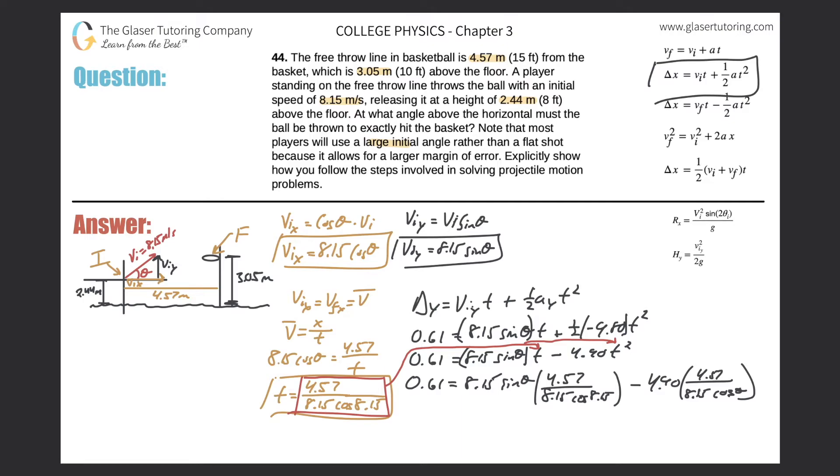Now what are we going to do? I did this so that now I can take this time value and substitute it on in. Why can I do that? Well, because the times are the same in the X and the Y frame, because I use both the same initial and final positions in both my X and Y formulas. So now I can do this substitution. So let's see, 0.61 is equal to 8.15 sine of theta. Now multiplied by my substituted value of 4.57 all over 8.15 times the cosine of theta. Minus now 4.90 times then 4.57 all over 8.15 times the cosine of theta squared.